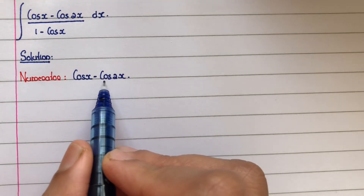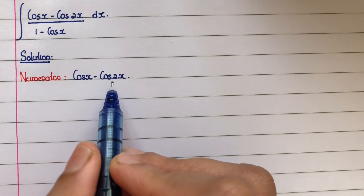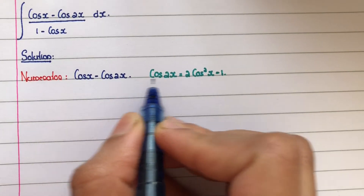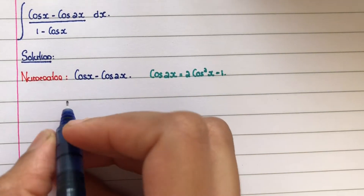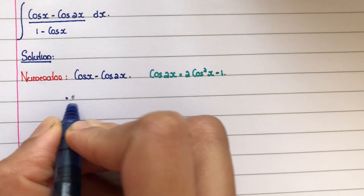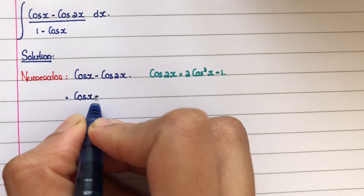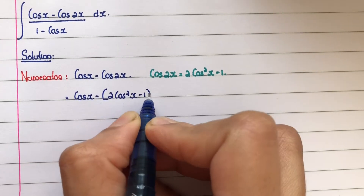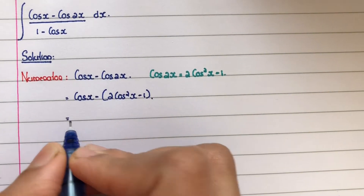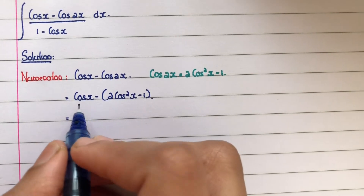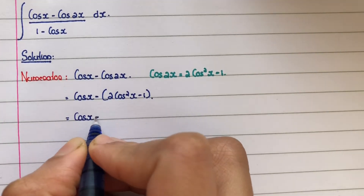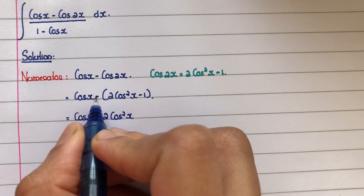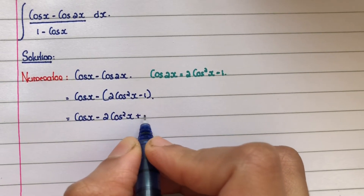We know that cos 2x equals 2 cos squared x minus 1. So substituting cos 2x with 2 cos squared x minus 1, the numerator becomes cos x minus (2 cos squared x minus 1), which on expanding the bracket gives cos x minus 2 cos squared x plus 1.